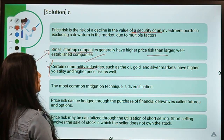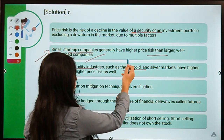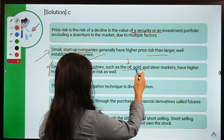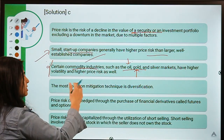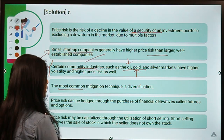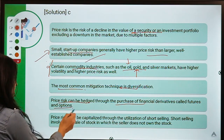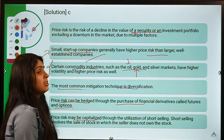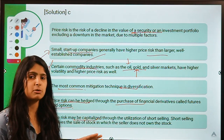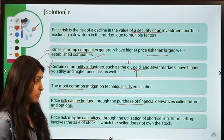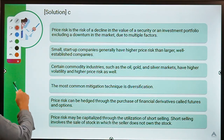Certain commodity industries are more vulnerable to price changes — like oil, silver, and gold. You may recall oil prices going into negative territory earlier this year and gold prices rising throughout the year. The most common mitigation technique is diversification. Price risk can also be hedged through the purchase of financial derivatives, and you can even capitalize if the value of a financial commodity falls too much after you have locked in at a higher price — that is how bears earn money in the stock market.